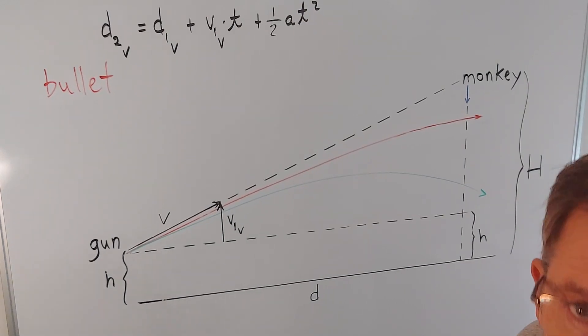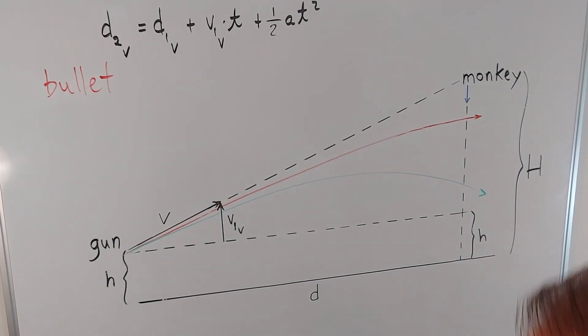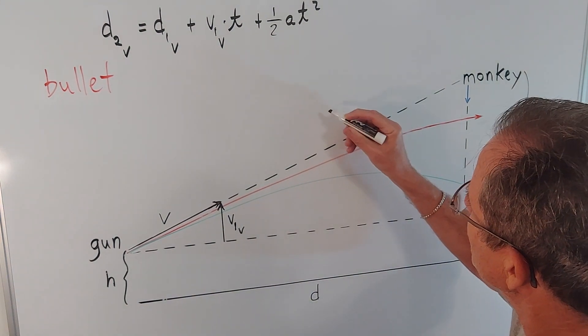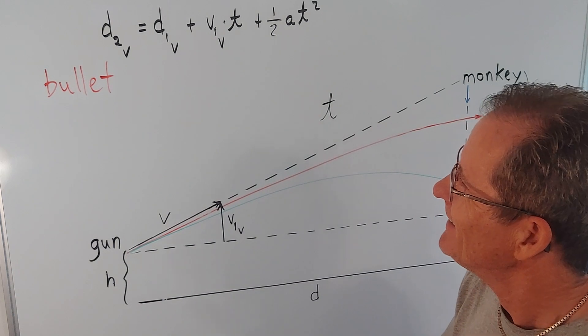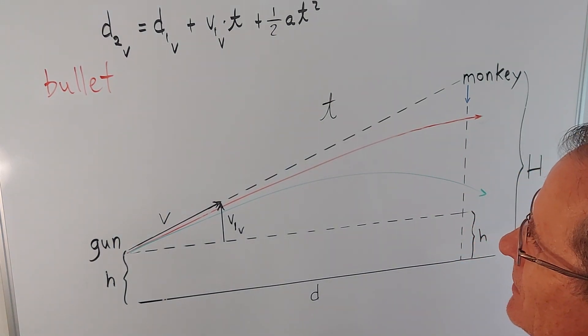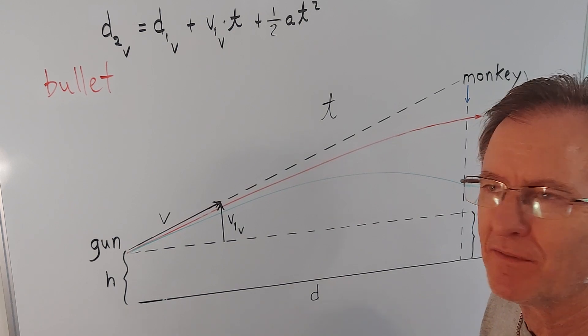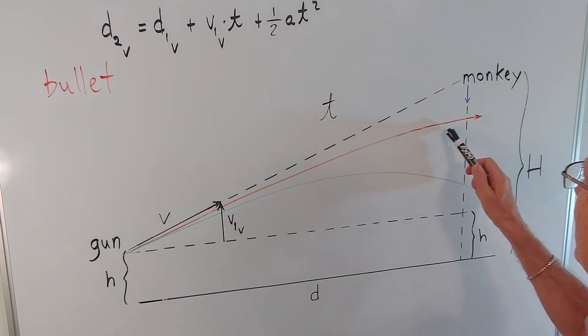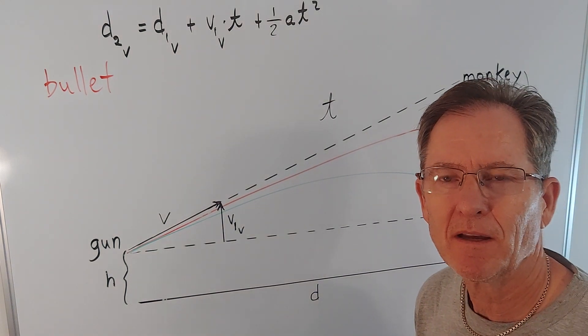So t will depend on the speed of the bullet. I'll put the t up in the air here somewhere because it's the time in the air. So let's analyze this for both the bullet and the monkey to find out if the bullet goes above the monkey, below the monkey, or if it hits the monkey.